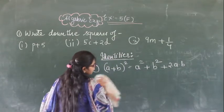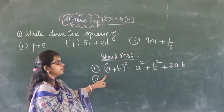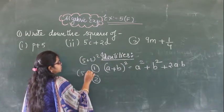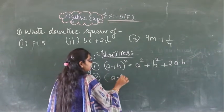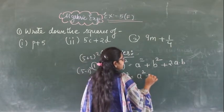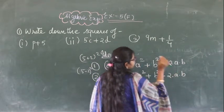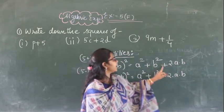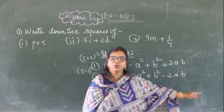Similarly, when the terms are in subtraction — suppose this is 5 minus 2 whole square — the formula to use is A minus B whole square, which equals A square plus B square minus 2 into A into B. Everything is the same except the last term becomes minus 2AB instead of plus 2AB.